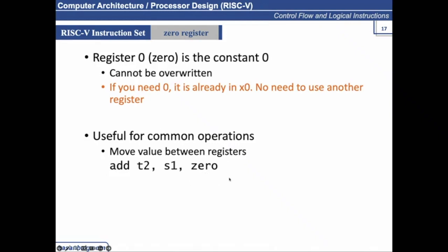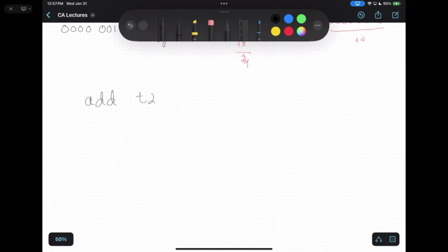So what are we doing here? Can anyone explain? We have add T2, S1, and zero here. So what were we doing? We were actually transferring the contents of S1 to another variable named T2, because when you perform S1 plus zero, it will remain S1, and you are assigning it to T2.